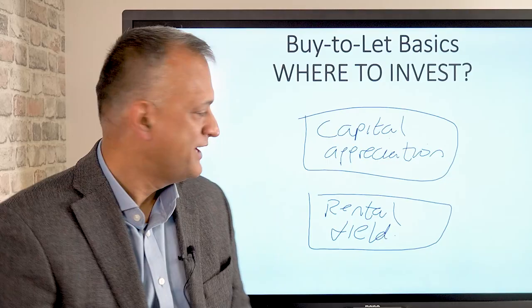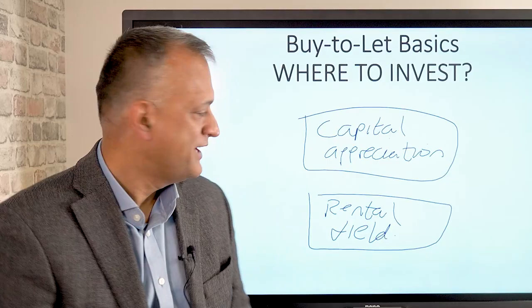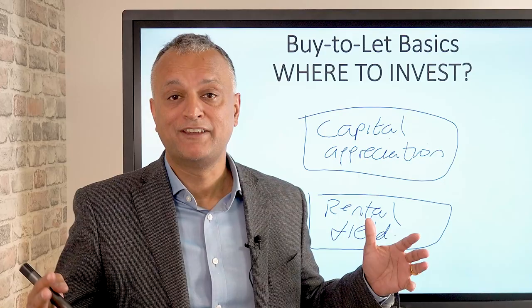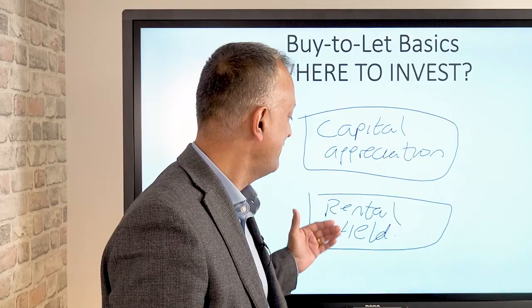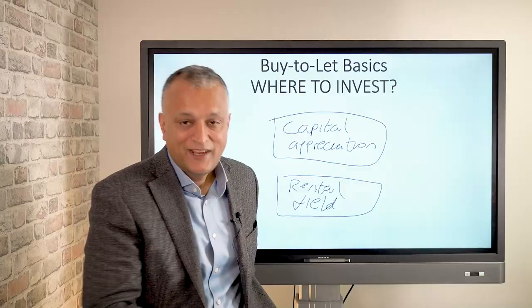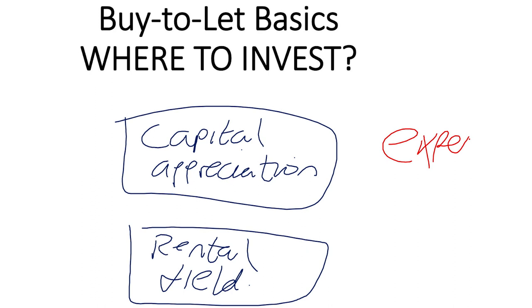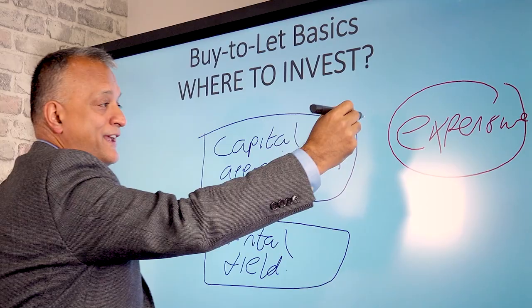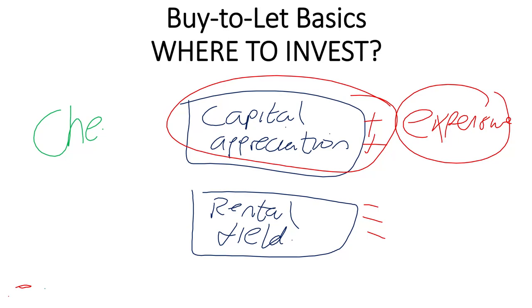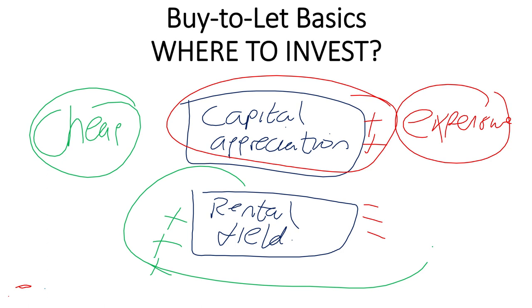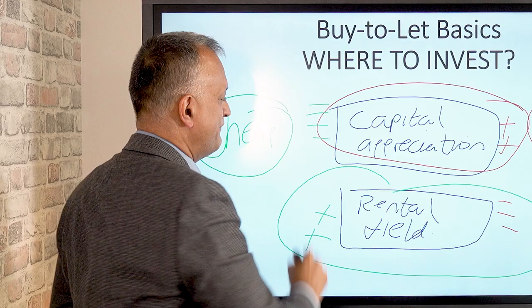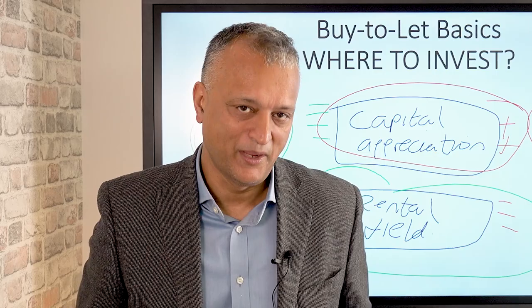One is through capital appreciation and rental yield. Capital appreciation is the amount that the property goes up in value for the time that you hold it. Rental yield is basically the return you make from the rental income that it generates, and the way that's calculated is the annual rent divided by the value of the property, expressed as a percentage, gives you your rental return over the year. In expensive or high-value areas, you tend to find you get a lot of capital appreciation, but not much rental yield. Conversely, in cheap areas, you end up with quite a lot of rental yield, but virtually none of capital appreciation.